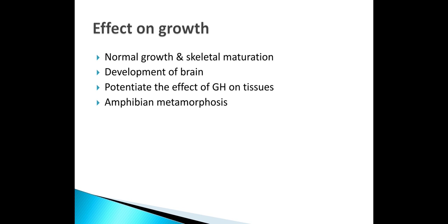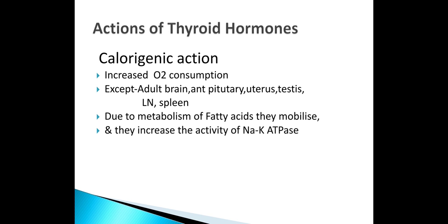First is action on growth. Thyroid hormones are essential for general growth and skeletal maturation. They stimulate the secretion of growth hormone, increase the synthesis of structural proteins, help in development of the brain, and potentiate the effect of growth hormone on tissues. In amphibians, there is a change called metamorphosis. Thyroid hormones increase the metabolism of almost all tissues of the body, except brain, testis, uterus, lymph nodes, and spleen.